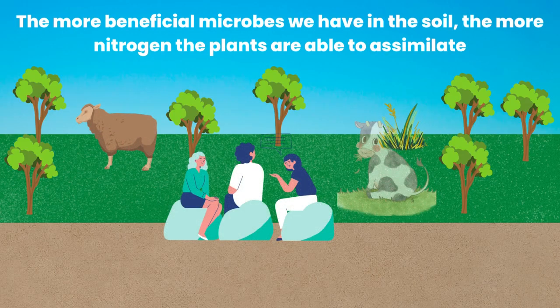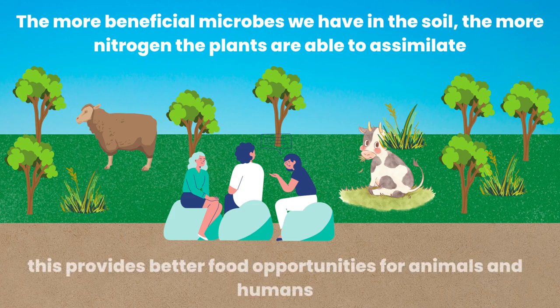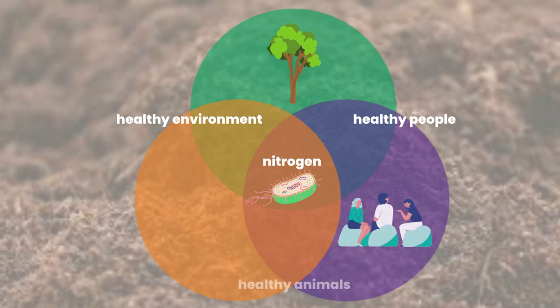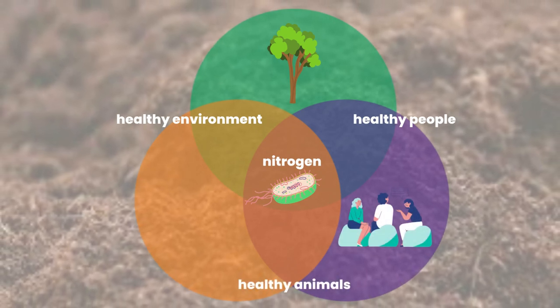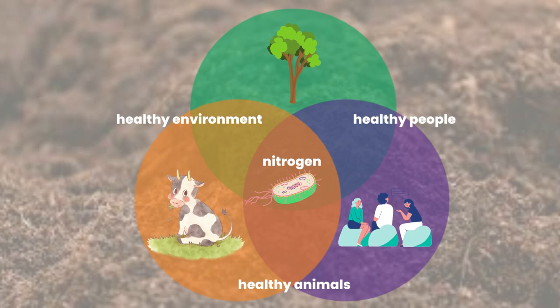The more beneficial microbes we have in the soil, the more nitrogen the plants are able to assimilate. This provides better food opportunities for animals and humans. Achaea in soil provides nitrogen for the plants, which promotes a healthy environment, healthy animals, and healthy people.